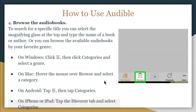To search for a specific title, select the magnifying glass at the top and type the name of the book or author. You can also browse available audiobooks by genre. On Windows, click the Three Horizontal Lines button, then click Categories and select a genre. On Android, tap the Three Horizontal Lines button, then tap Categories.